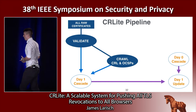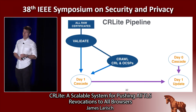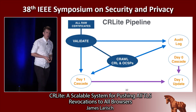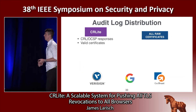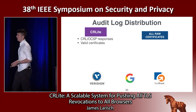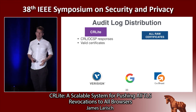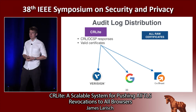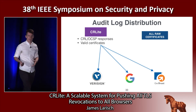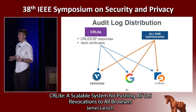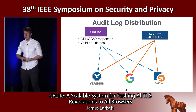We think the space trade-offs are reasonable considering that we have 100% revocation coverage compared to CRL set and one CRL, which have less than 1%. As a client, you must trust that we do not omit revoked certificates or include non-revoked certificates. So we produce a third artifact called an audit log, which contains all valid certificates and all signed CRL and OCSP responses received from certificate authorities. Independent third parties can verify the integrity of the filter cascades we create, and verifiers can download the raw certificate information to reconstruct filters and assert that we are doing the right thing.